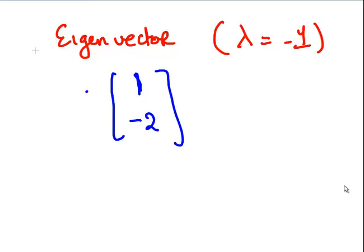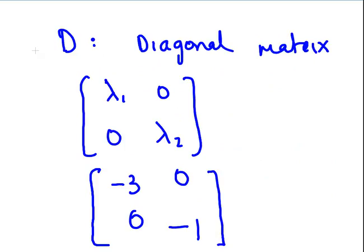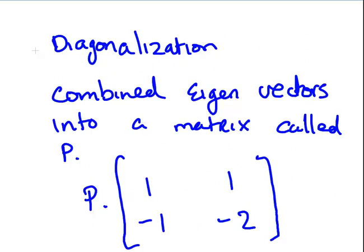The first matrix I constructed was P — the combined eigenvectors into a single matrix. P is 1, 1, minus 1, and minus 2. It's very important that the first eigenvector, 1 and minus 1, is the first column, and this corresponded to the eigenvalue minus 3. The second eigenvector, 1 and minus 2, is the second column and corresponds to the eigenvalue minus 1.